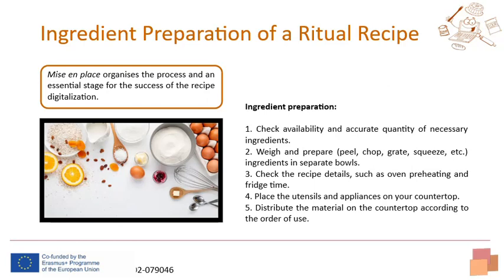Firstly, check the availability and accurate quantity of necessary ingredients — this is usually calculated for four people on average. Secondly, weigh and prepare the ingredients by peeling, chopping, grating, squeezing, or any other form necessary for the recipe, and then place them in separate bowls.